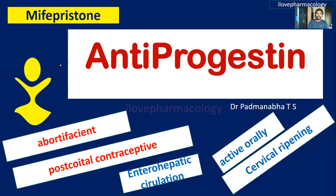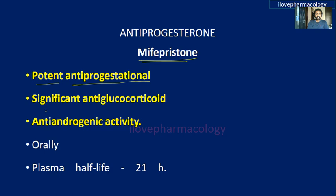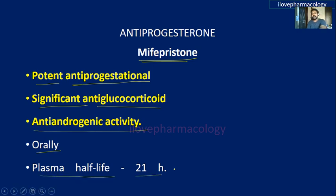Welcome to the class on antiprogestins. Mifepristone is an antiprogesterone drug with potent antiprogestational activity. Along with this, it also possesses significant anti-glucocorticoid as well as anti-androgenic activity. It is most commonly administered through the oral route with a longer plasma half-life of around 21 hours.